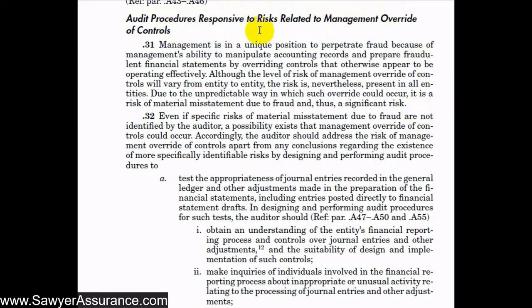Management is in a unique position to perpetrate fraud because they have the ability to manipulate the accounting records and prepare fraudulent financial statements by overriding controls that are otherwise operating effectively. Since the ways this can happen are very unpredictable, we call this a risk of material misstatement due to fraud, making it a significant risk. There are different levels of risk for management override of controls at different entities, but it is nevertheless present in all entities, so we should list it as a significant risk in every audit.